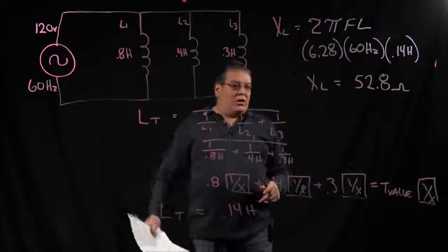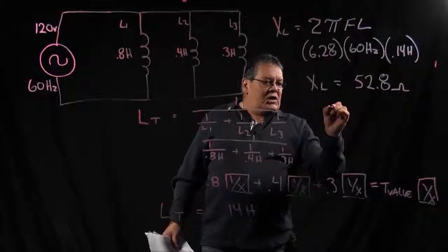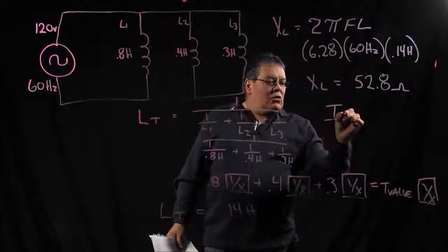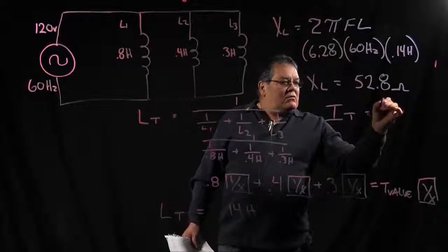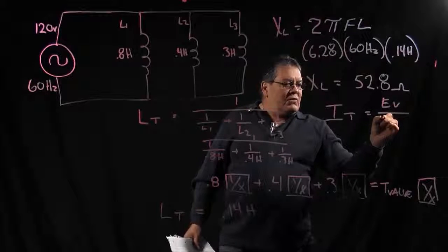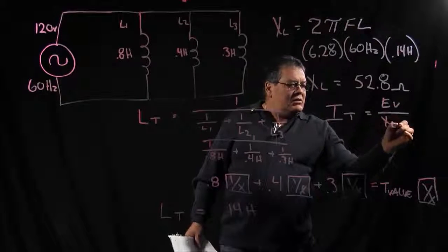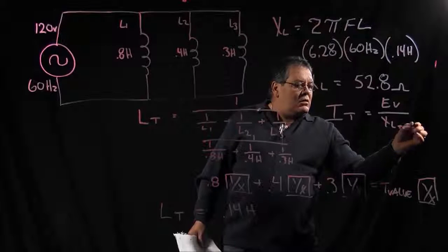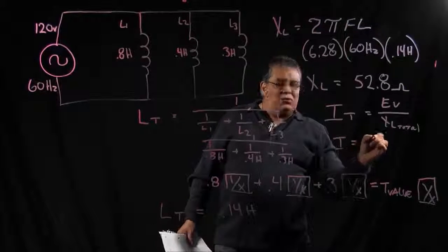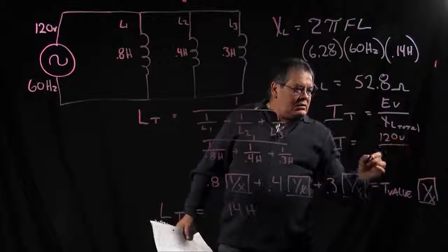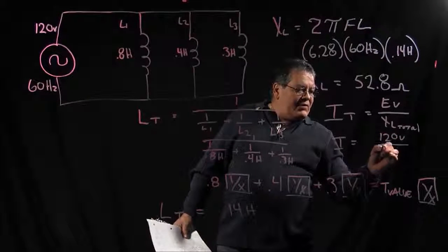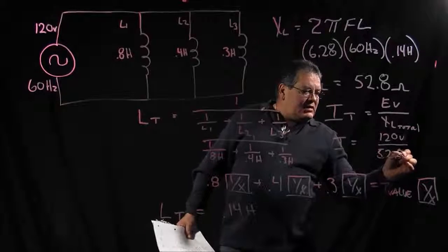So if you want to find your total current, again you use Ohm's law. I total is equal to our voltage total over our inductive reactance total. So I total equals 120 volts divided by 52.8 ohms.